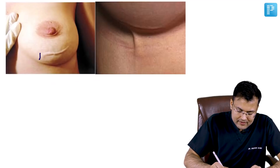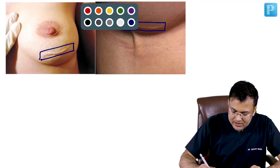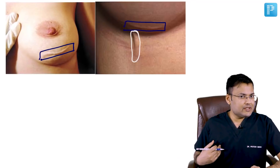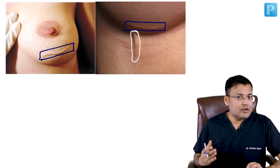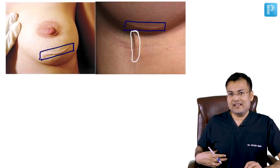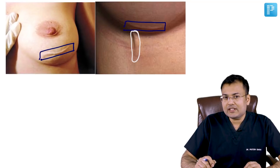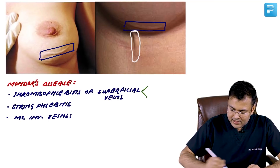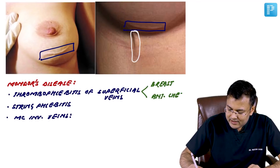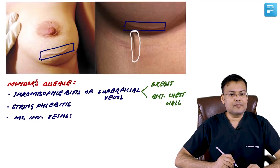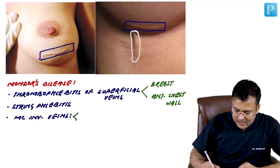In these images you can find a cord-like structure in the inframammary region and anterior chest wall. The name of this condition is Mondor's disease, characterized by thrombophlebitis of superficial veins of the breast and anterior chest wall — specifically the inframammary region. On palpation it feels like a string or cord, so another name is string phlebitis.